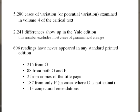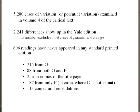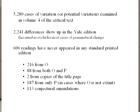In volume four there are over 5,000 cases of variation considered. About 2,000 of these the Yale edition accepts, differing from the current standard text. Most of these changes aren't earth-shaking. However, there are over 600 changes in the Yale edition which have never appeared in any standard printed edition, LDS or RLDS — the majority coming from the original manuscript. There are also a good number from the printer's manuscript that have never been implemented. Additionally, there are 113 conjectural emendations.